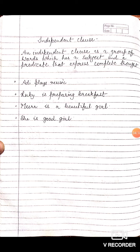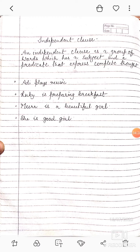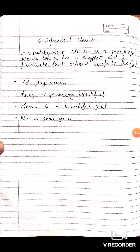Now we'll talk about independent clauses. An independent clause is a group of words which has a subject and a predicate that expresses complete sense. They have a subject, they have a predicate, and they are capable of expressing their thoughts clearly. Look at the examples: 'Aadi plays music.' 'Ruby is preparing breakfast.' 'Meera is a beautiful girl.' 'She is a good girl.' These are all examples of independent clauses.